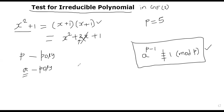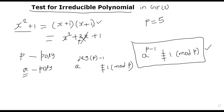...such that a to the power of (2 to the degree of p minus 1) is not equal to 1 mod p, then we can conclude p is not an irreducible polynomial. However, if you are not able to find any such a after trying quite a few a's, then with high probability we can conclude that p is irreducible. So that is the idea of this randomized algorithm.